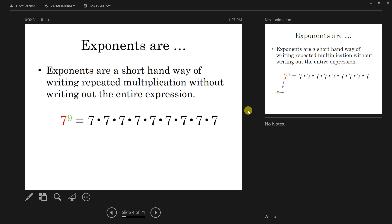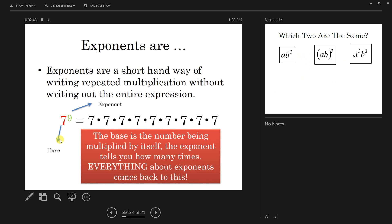And here we're just talking about the basic idea that an exponent is a shorthand for repeated multiplication, and the little number on the top is the exponent, and the base is the number on the bottom.